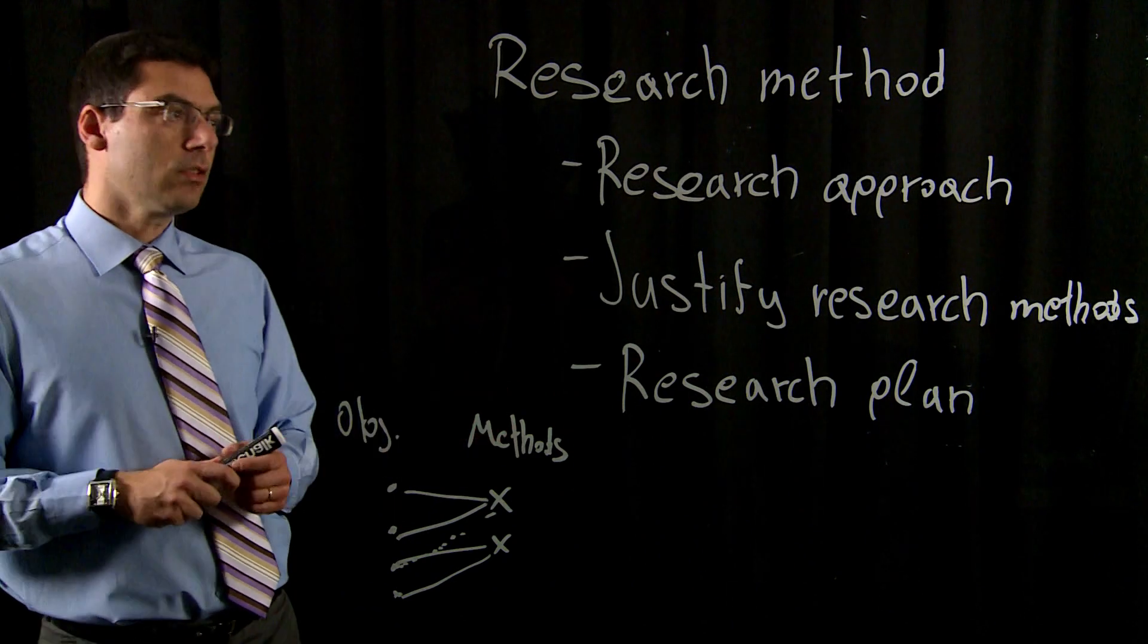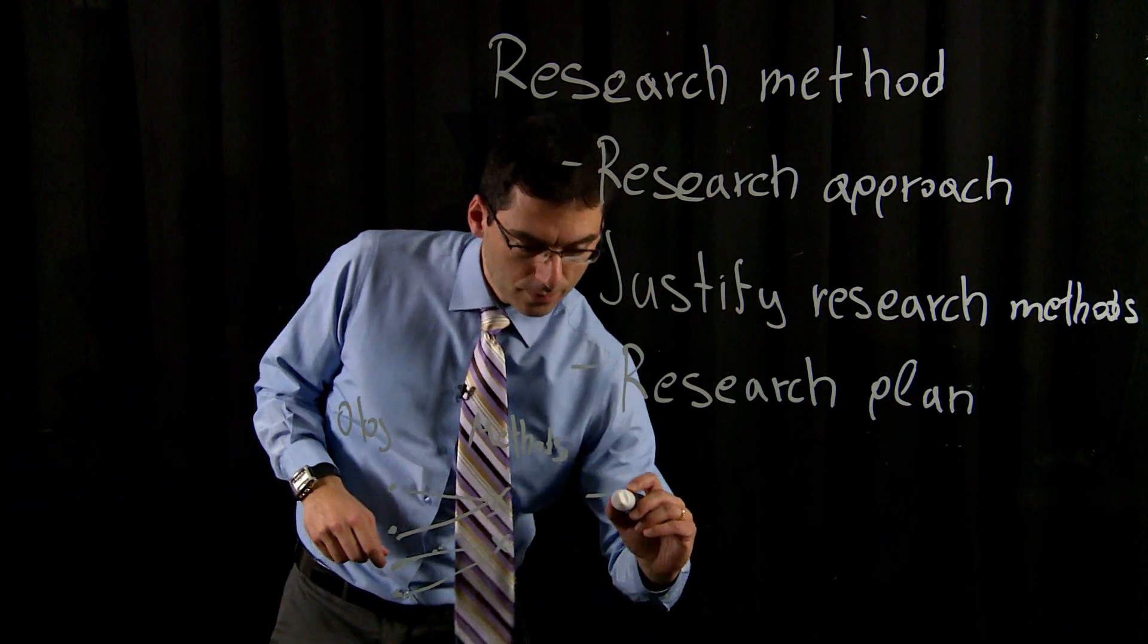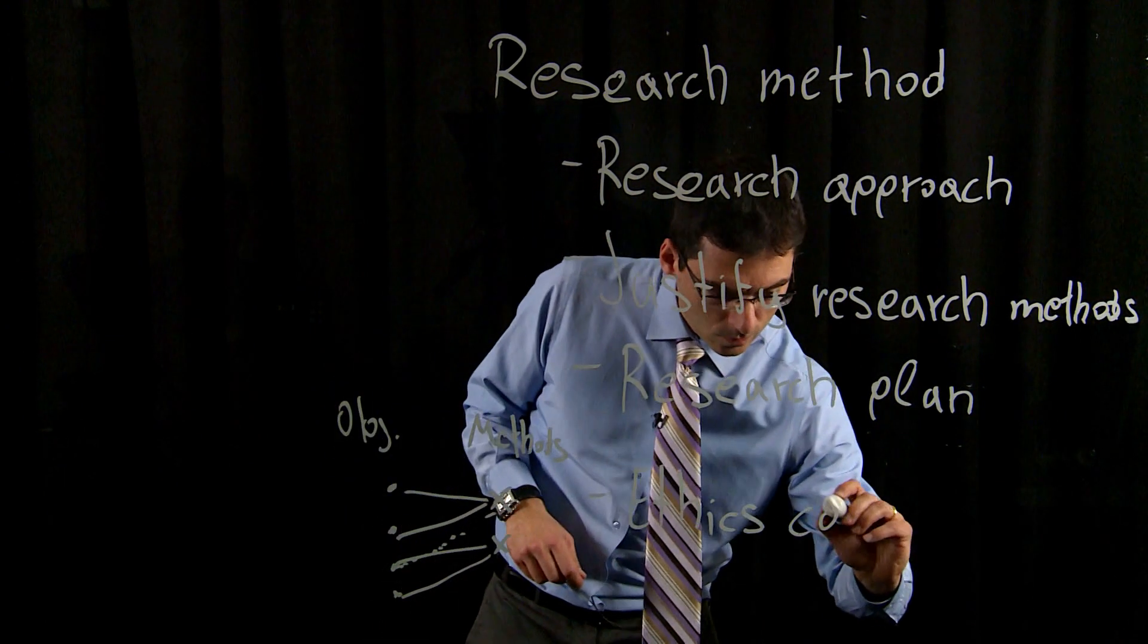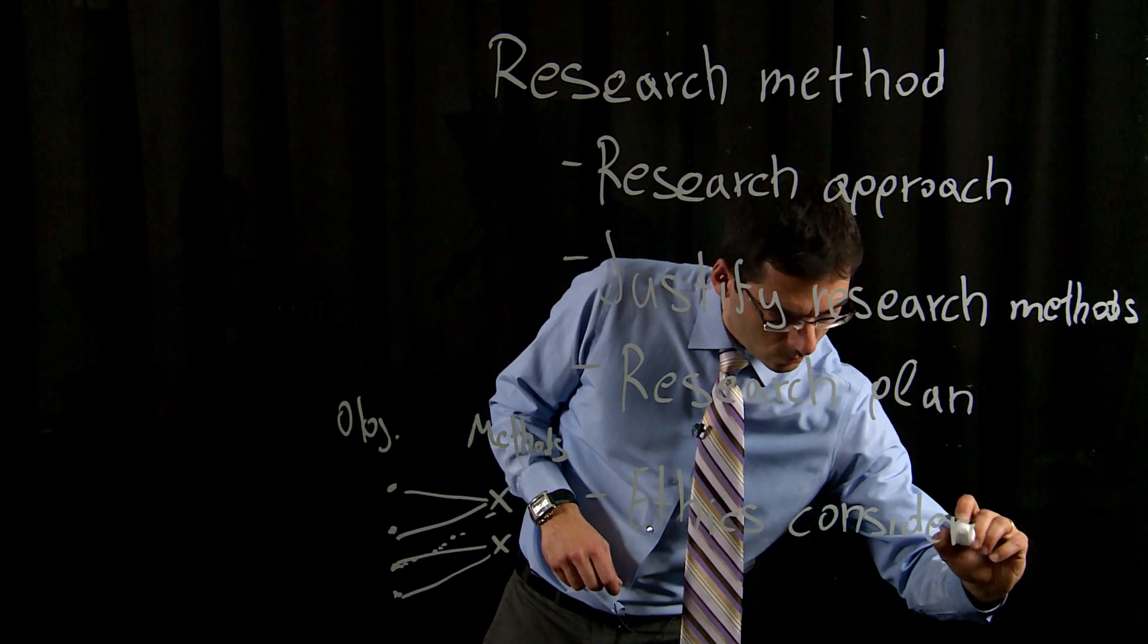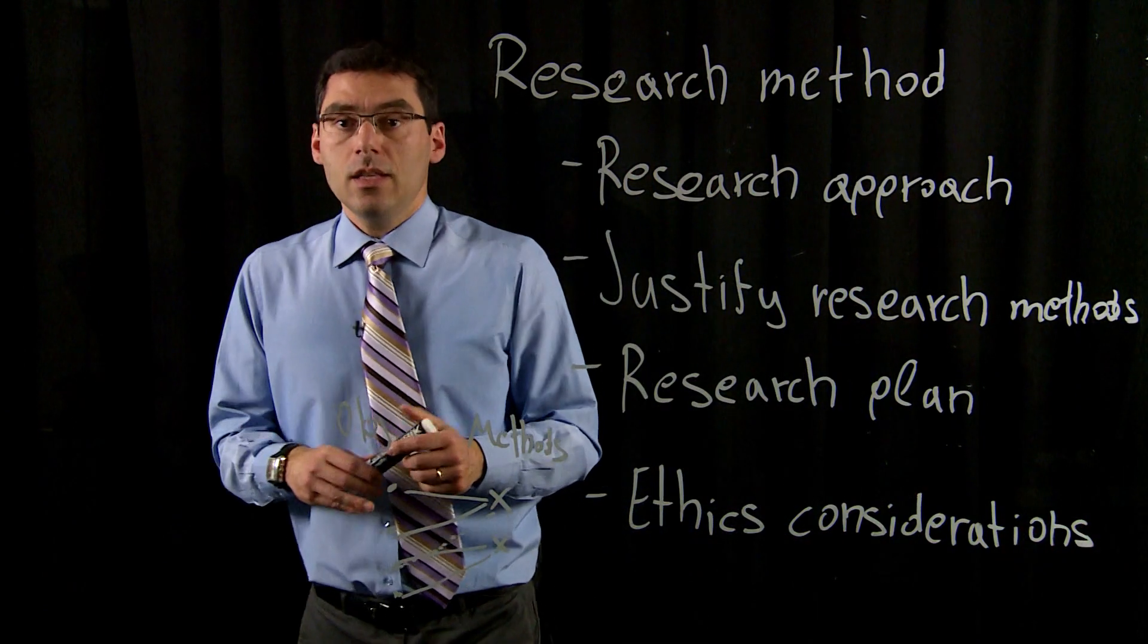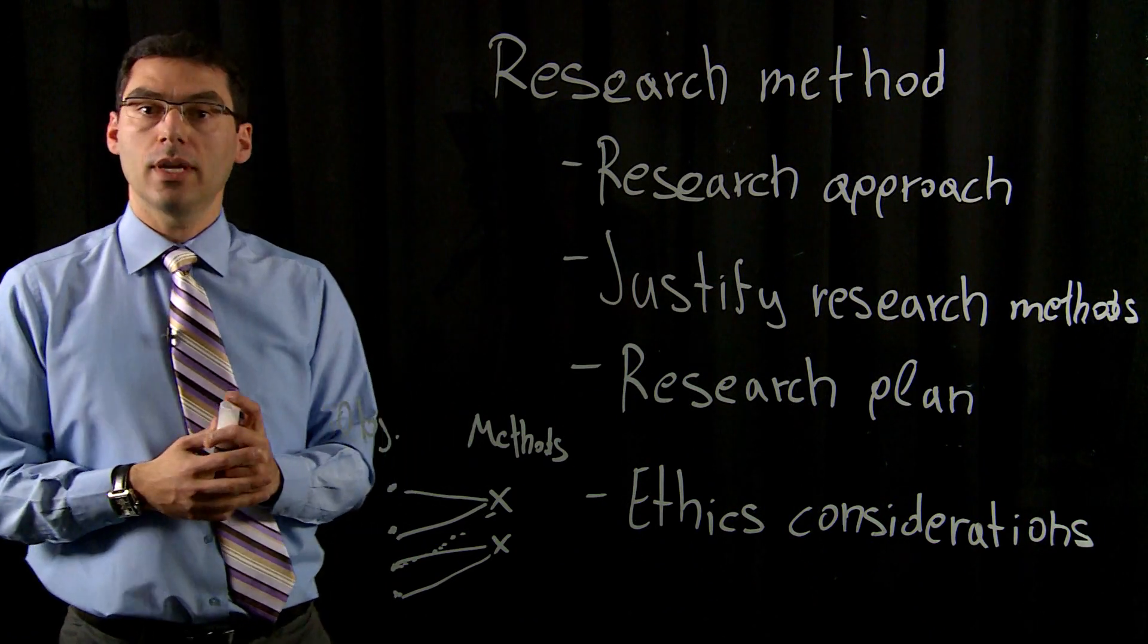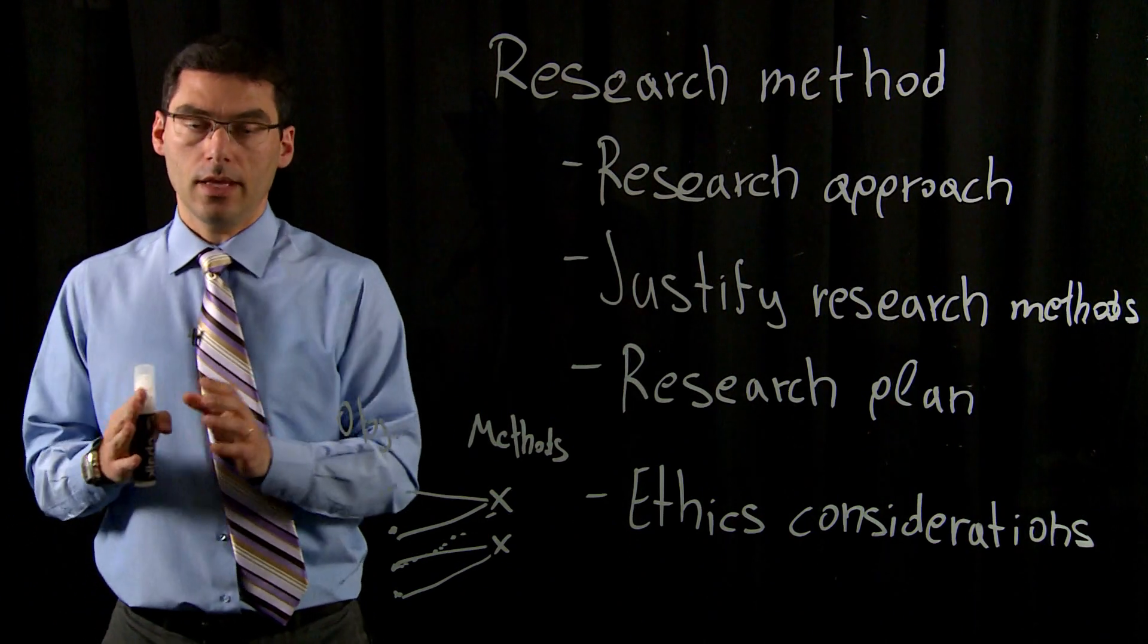The last part of the research method subsection would have to do with ethics considerations. And this is very important. When you are designing your research, you need to make sure that you have considered all the ethical part.